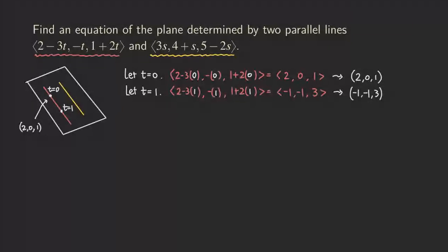It's not okay to find a third point by plugging another t value into the first line. Because then the three points would all lie on the same line, and the two vectors formed from them would be collinear — when you take the cross product, you'd get the zero vector. So the third point must lie on the other line.